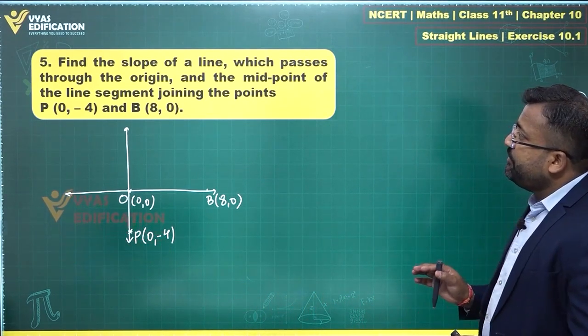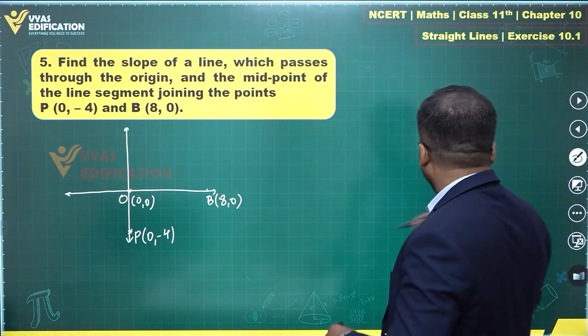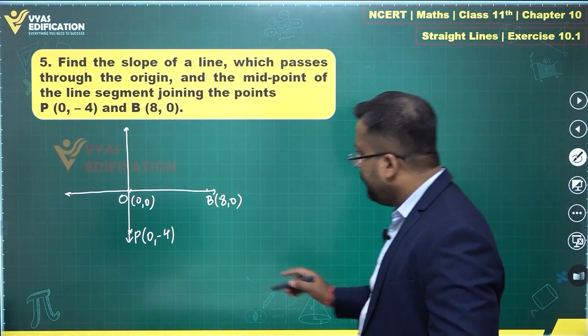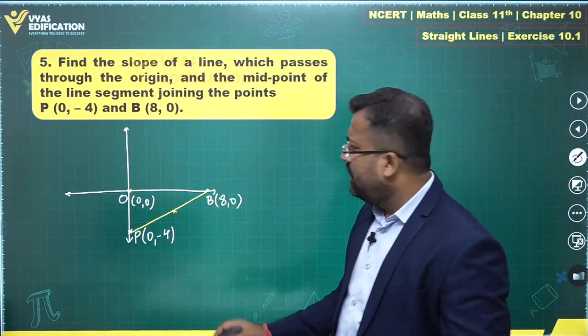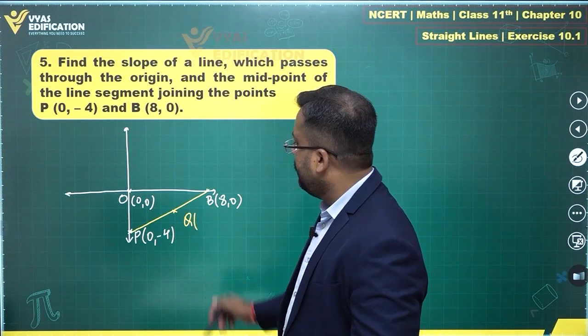Slope of a line which passes through the origin and midpoint of the line segment. The midpoint is important. Midpoint of this line segment over here will be somewhere here. Let's call that midpoint Q.